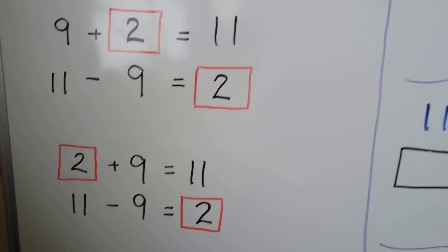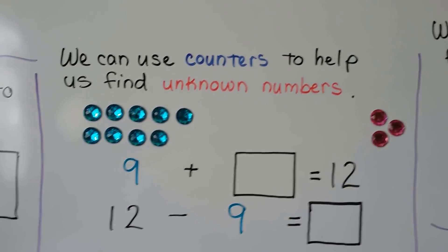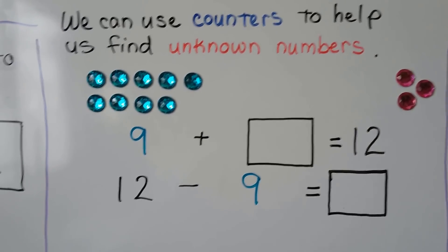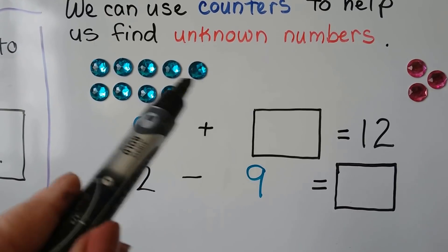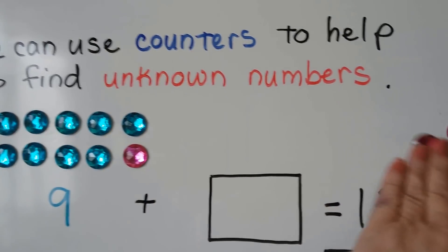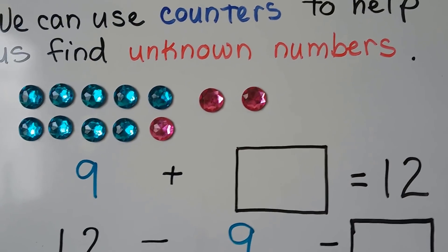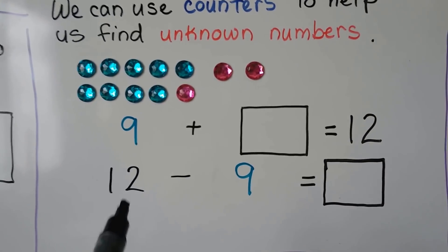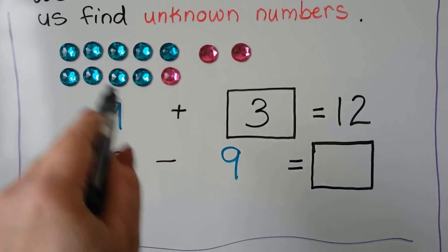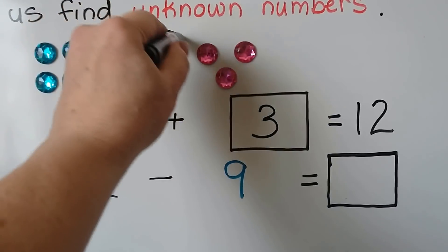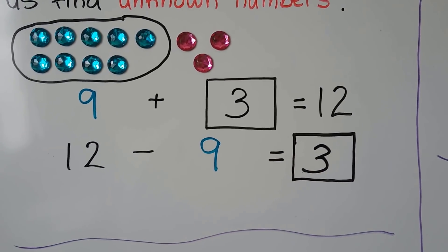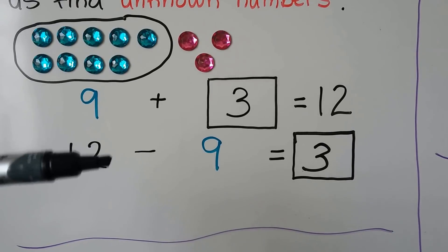We can use counters to help us find unknown numbers. Here we have 9 plus an unknown number is equal to 12. We have 9 blue gems and need to add more so we have 12. We add one more to make 10, one more makes 11, and one more makes 12. So 9 plus 3 pink gems makes 12. And 12 minus the 9 blue ones leaves 3 pink ones — these are related facts using the same numbers in a different order.